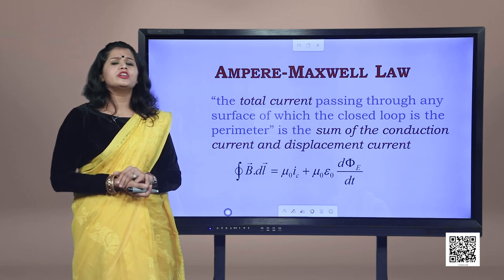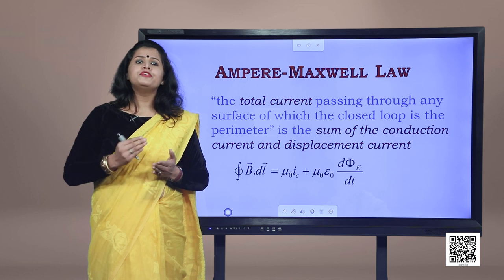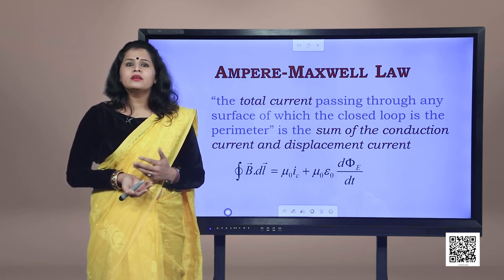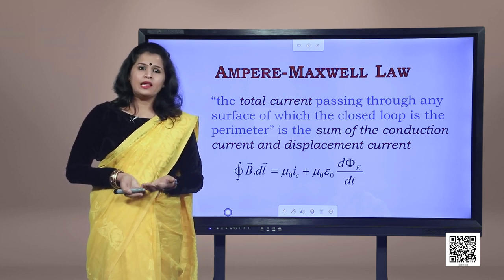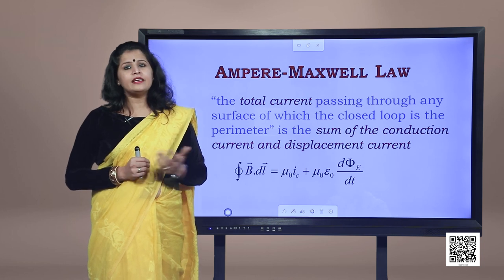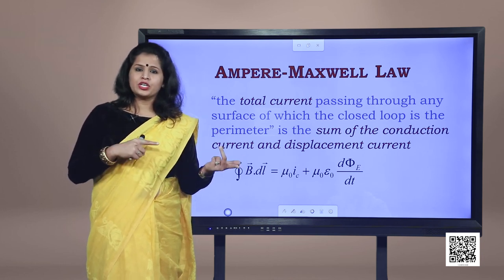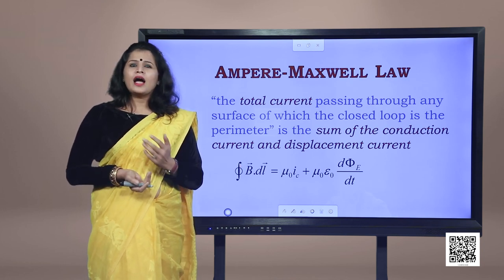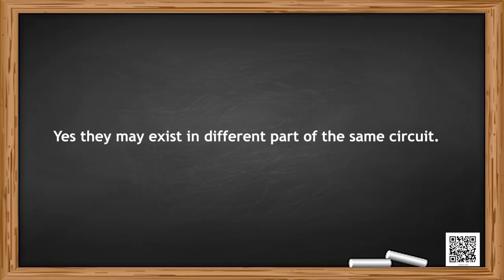This equation is known as the Ampere-Maxwell law. Displacement current has the same physical effects as conduction current. Both conduction and displacement current may exist in different parts of the same circuit.